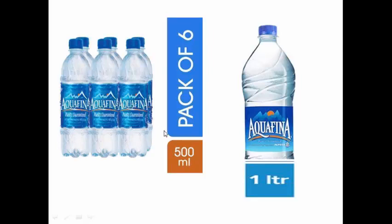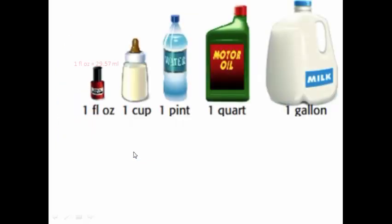You know milliliters — I go and buy a water bottle of 500 milliliters or 200 milliliters. Right now let's learn the fluid ounce. Each fluid ounce equals 29.57 milliliters. Instead of saying this long number — 29.57 milliliters — we can just say one fluid ounce. So one fluid ounce is equivalent to 29.57 milliliters.